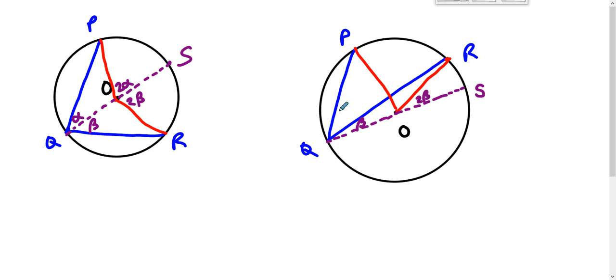And we know that this whole angle here, angle PQS, has a measure of alpha plus beta, which means that this whole angle here is twice as big. So then how big must POR be? It must be 2 alpha big by betweenness of rays. And so the central angle is twice as big in measure as the inscribed angle.